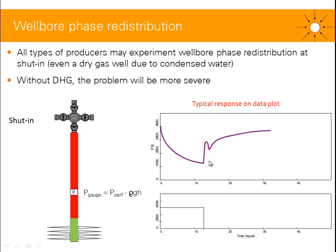A very characteristic sign of liquid wellbore phase redistribution is a pressure that decreases. But you don't need to see this to have wellbore phase redistribution. You might end up with what you think is perfect PBU data, but this data will be affected by wellbore phase redistribution — for example, if the fluid is getting lighter and lighter below the gauge as the liquid is being re-injected. You might not see this problem at all.